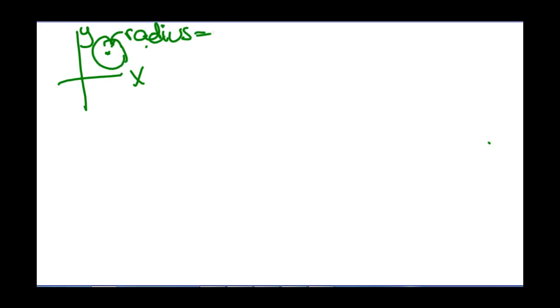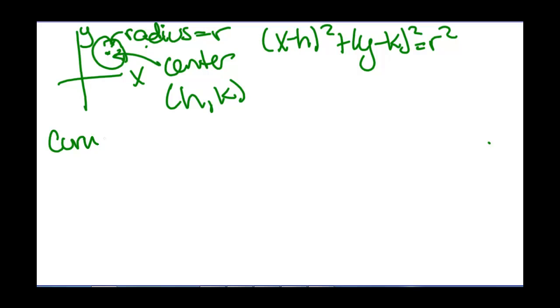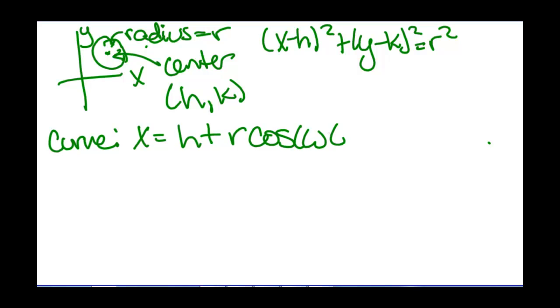There are two types of curves we need to know how to convert to parametric equations. The first is circles. For a circle with radius r and center (h, k), the standard equation is (x minus h) squared plus (y minus k) squared equals r squared. The parametric equations for this circle can be written as x equals h plus r cosine of omega t, and y equals k plus r sine of omega t.